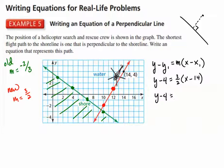So, we begin, y minus 4, we're going to multiply out 3 halves times x, then 3 halves times negative 14 is negative 21. And I'm simply going to add 4 on both sides, and we will end up with, sorry, that's a little better,